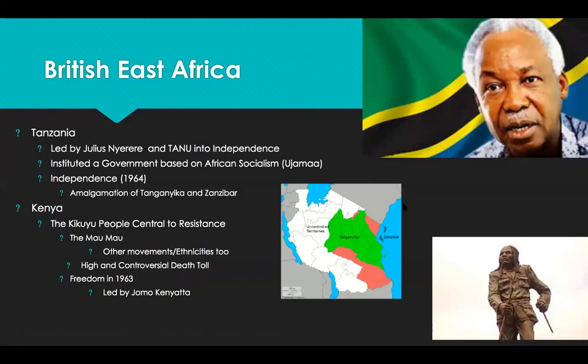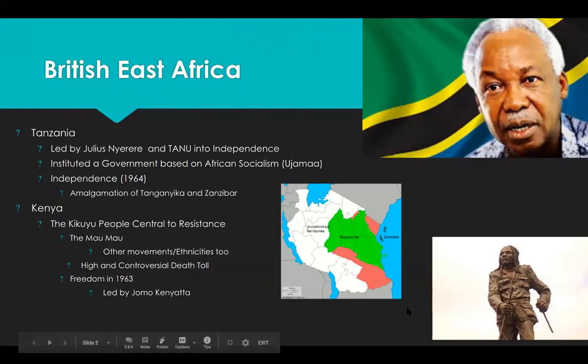In East Africa, Tanzania took the lead in the independence movement. As with other parts of the continent, it was fundamental fallout in the post-World War II era that facilitated the surge in African nationalism in what was then Tanganyika. Tanganyika is pictured here in the green.